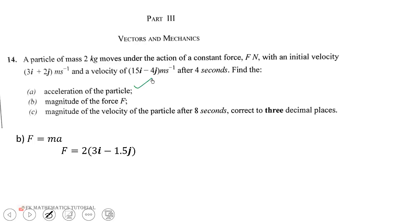When we expand, we get F = (6i - 3j). The magnitude of a vector ai + bj equals the square root of (a² + b²).